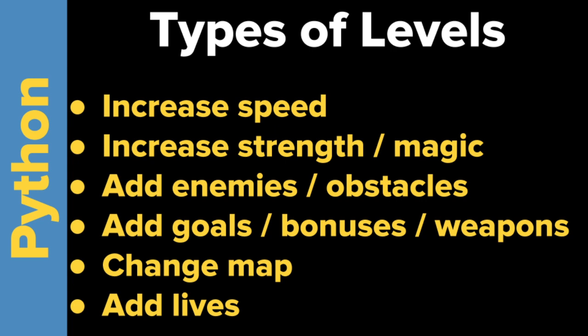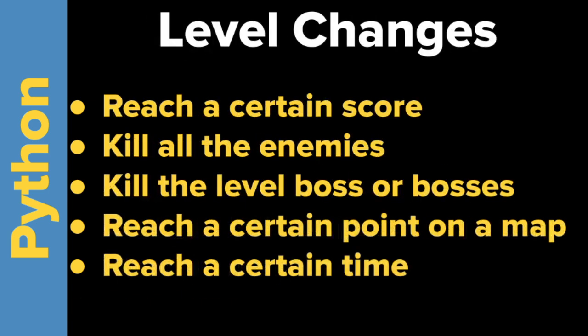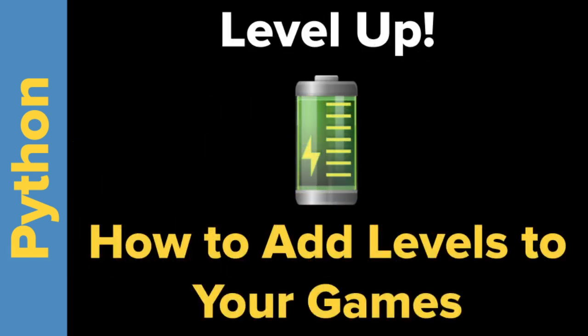Going back to what we covered: there are different types of levels and different things you can do to define what a level means — that depends on your game. There are also different types of triggers for level changes. In this example it was reaching a certain score, but you need to track both the score and the current level so you know how things should change. Thanks for watching — subscribe, become a member if you can, and comment below. Take care!